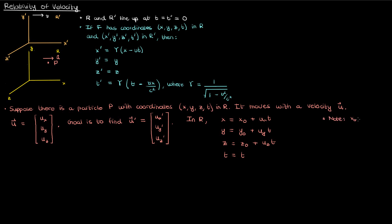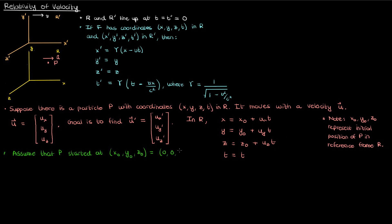Note that x0, y0, and z0 represent the initial position of the particle p in the reference frame r. For our own convenience, we'll assume that the particle p started at the origin 0, 0, 0. When we do this, the equations above simplify. We can make this assumption without loss of generality — I could set my origin to be the starting point of any particle, as long as I take everything else into account using this origin.